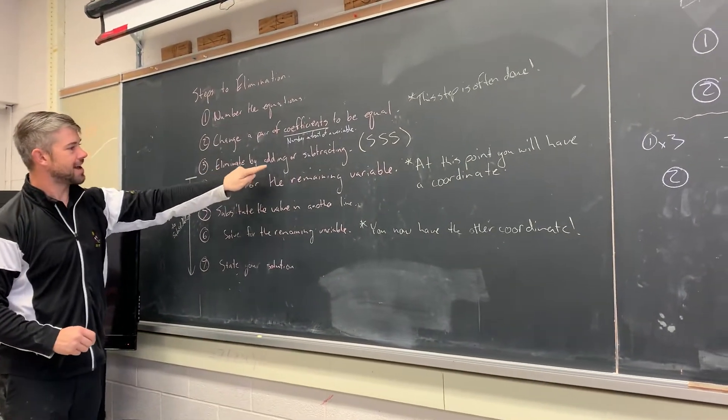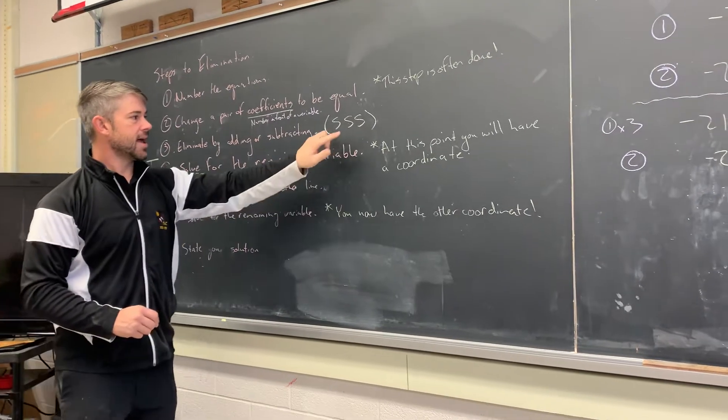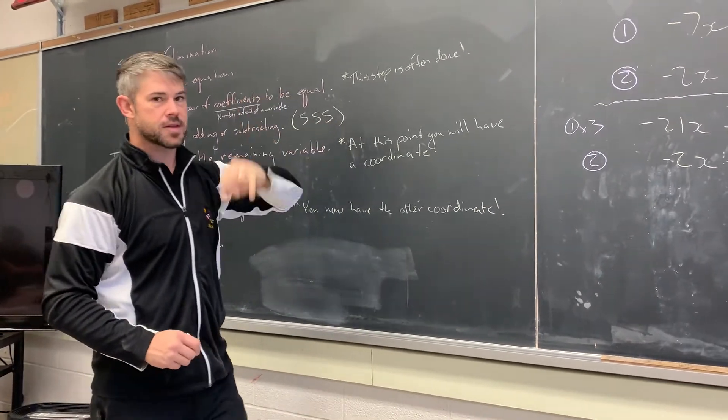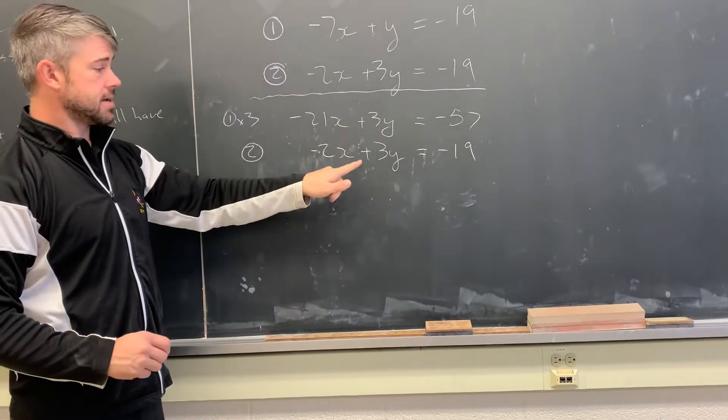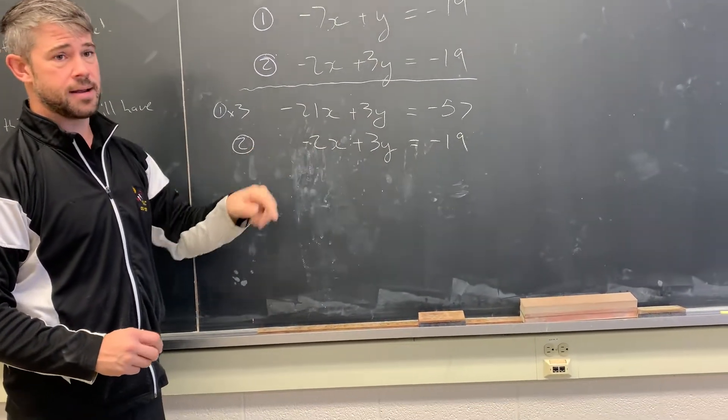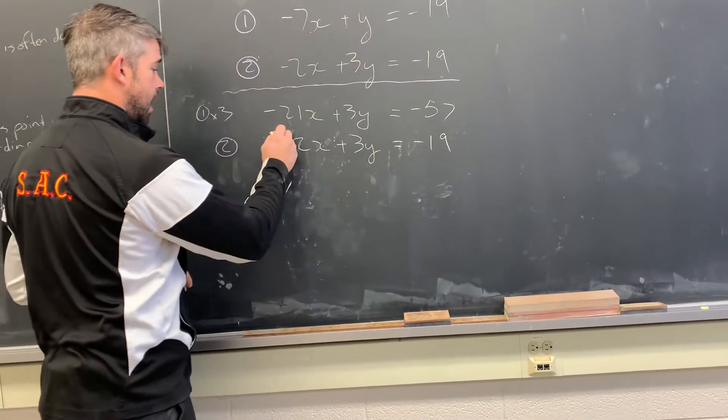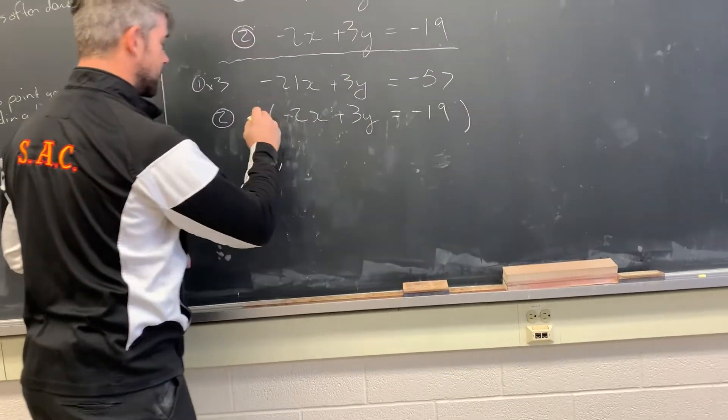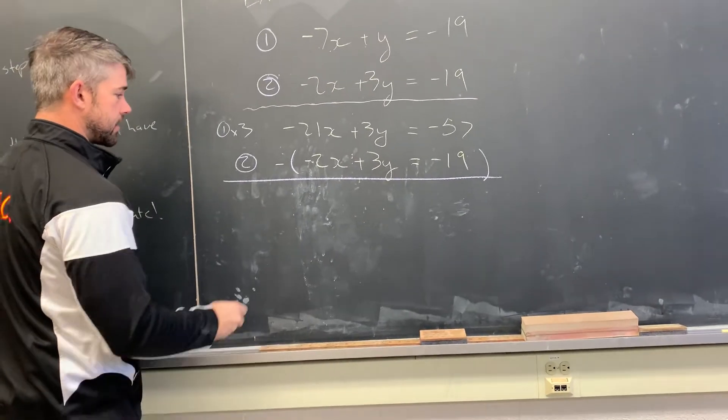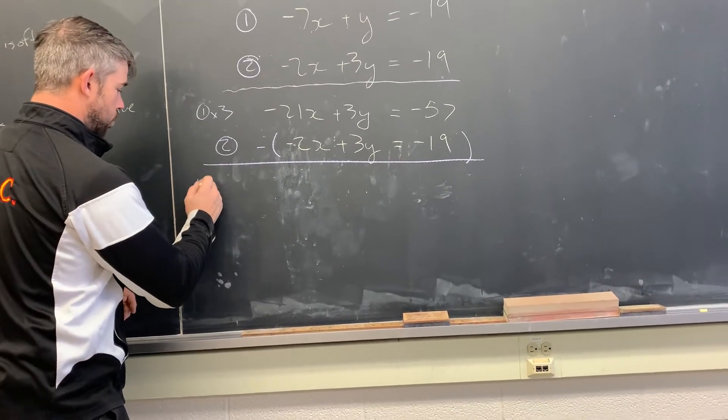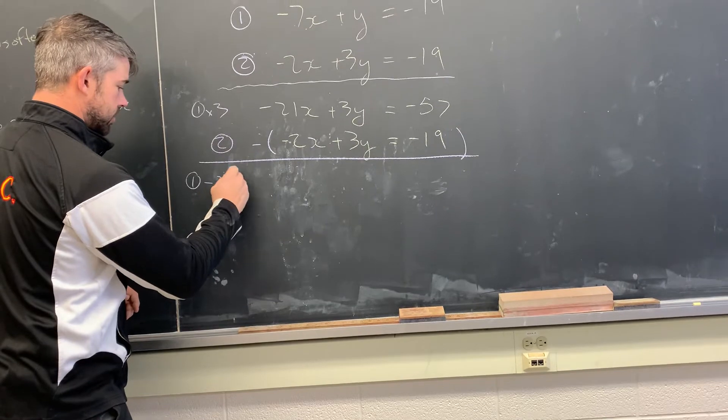Hop over and have a look at step three. Step three says eliminate by adding or subtracting. And then SSS, which means same signs subtract. Here I have positive three y and here I have positive three y. Because the signs are the same, I'm going to go ahead and subtract them. So I'll draw a line to show I'm doing a subtraction just like we did in elementary school. And I'm going to take equation one and I'm going to subtract equation two.